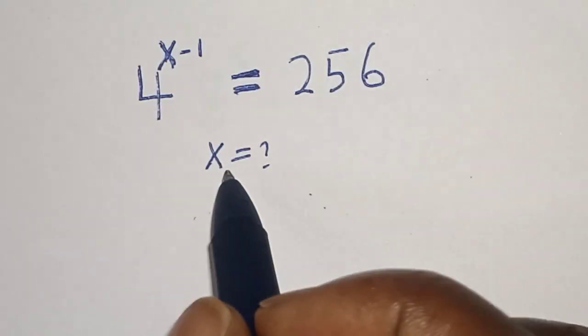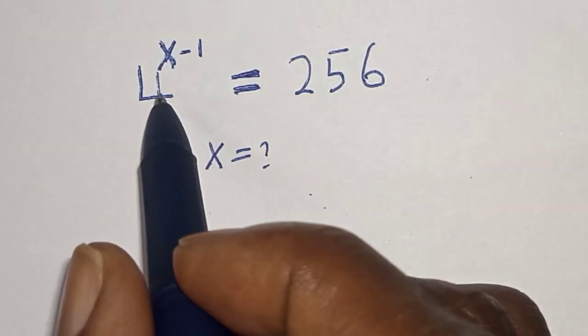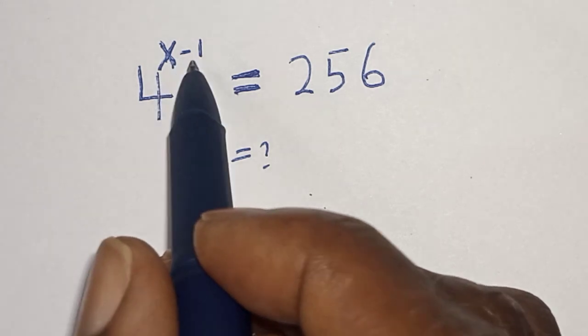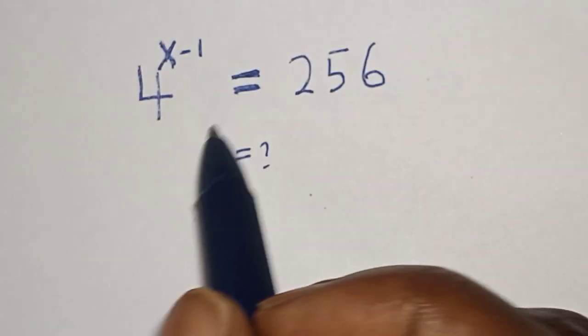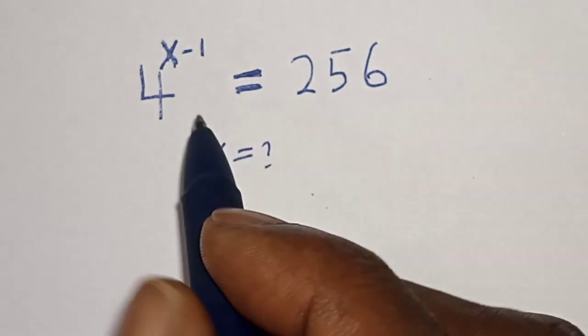Hello, welcome to Magis. In this class, we want to find the value of x from this equation: 4 raised to power x minus 1 is equal to 256. We are going to solve this equation in two ways.